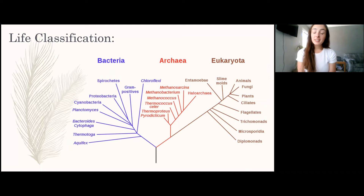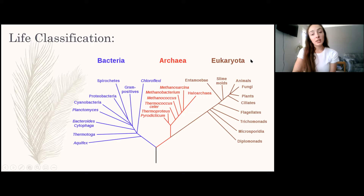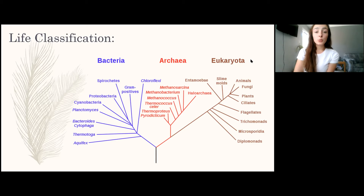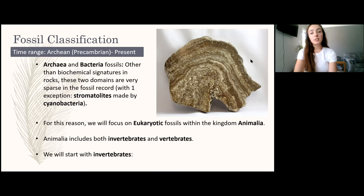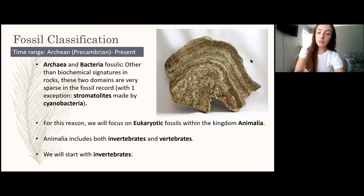Moving to classifications — this is where you use taxonomy rather than taphonomy. In the tree of life, there are three domains: Bacteria, Archaea, and Eukaryota. We are eukaryotes, which are multicellular organisms like animals, fungi, and plants. Bacteria and Archaea are single-celled and together are called prokaryotes. Prokaryotic fossils include stromatolites made by cyanobacteria, but otherwise the prokaryote fossil record is slim. We'll focus on eukaryotic fossils within Kingdom Animalia.